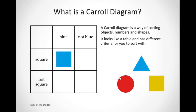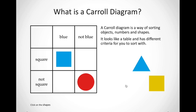Let's try another shape. This circle over here — is it a square? No, it is a circle. So we know it's going into this block. Now we have to look at the color. Is it blue? No, so it goes under the block that says not blue and not a square. Now let's look at this triangle over here. Is it square? No, it is a triangle, so we know it goes under not square. But what color is it? It is blue, so we can put it in this block over here.